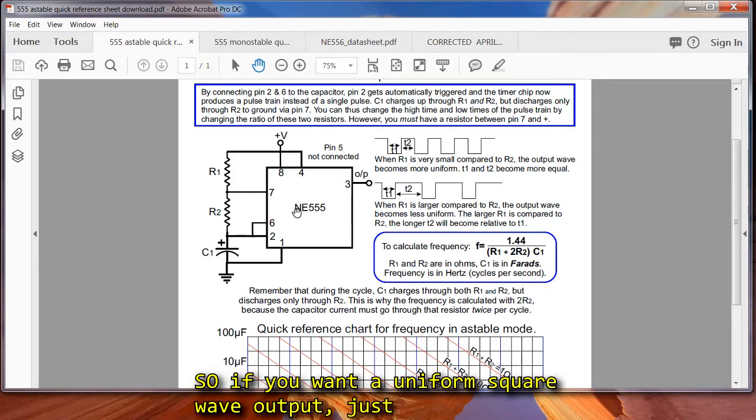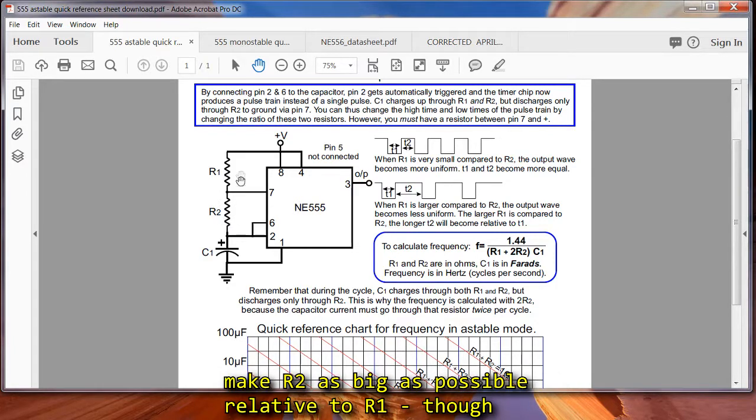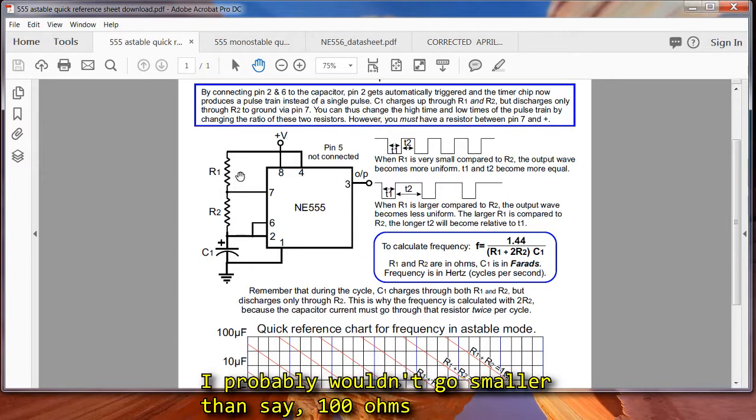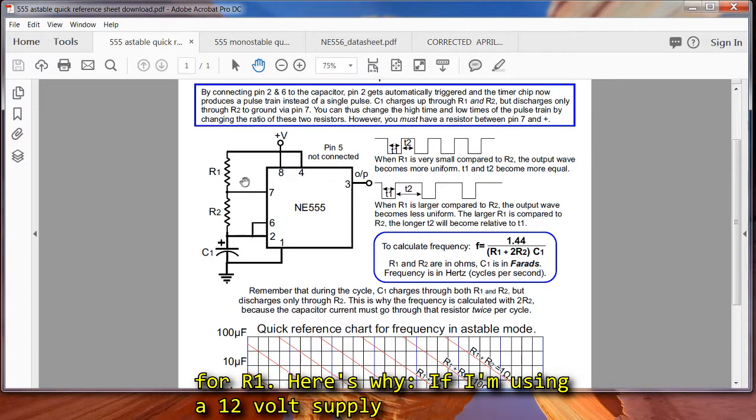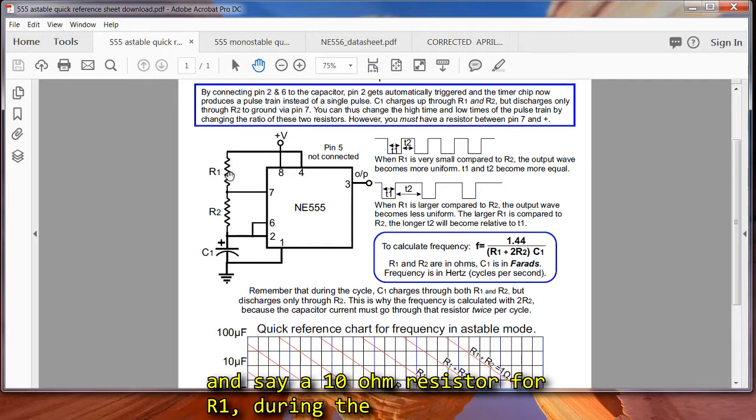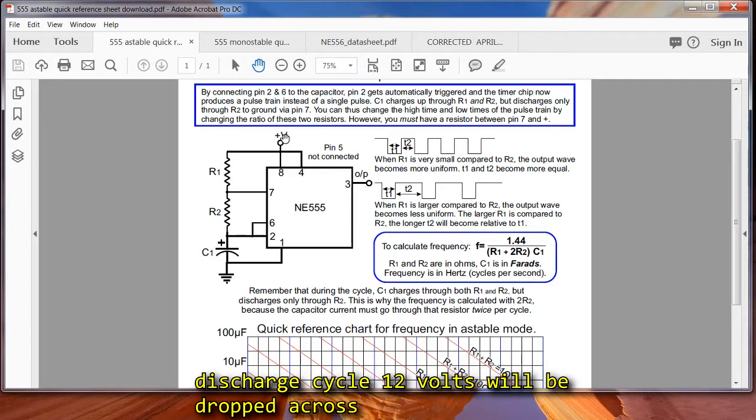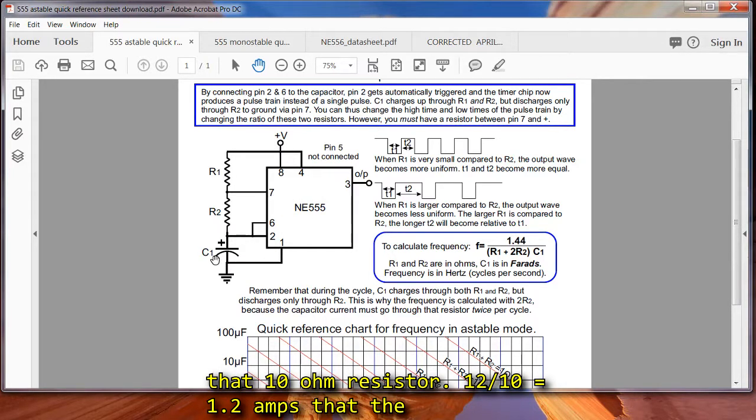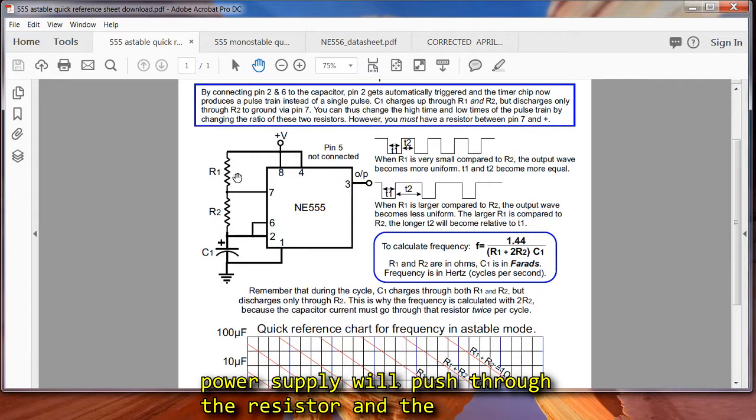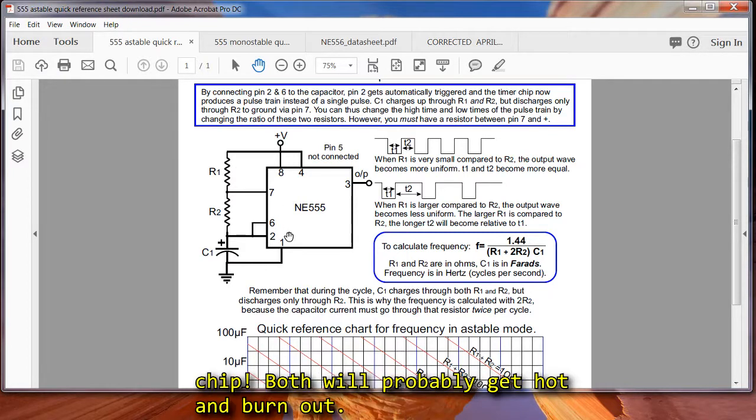So if you want a uniform square wave output, just make R2 as big as possible relative to R1, though I probably wouldn't go smaller than say 100 ohms on R1. Here's why. If I'm using a 12 volt supply, and say a 10 ohm resistor for R1, during the discharge cycle, 12 volts will be dropped across that 10 ohm resistor. 12 divided by 10 is 1.2 amps that the power supply will push both through that resistor and the chip. Both will probably get hot and burn out.